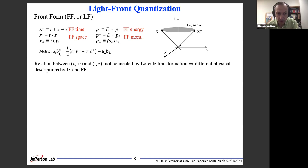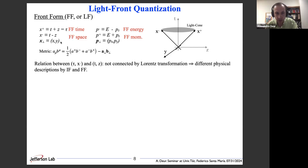Looking at the Lorentz-invariant quantity, it should be invariant regardless of which form you use, which implies that the metric of the front form has to be different from the metric of the instant form. The relation between front-form time and space and instant-form time and space is not a Lorentz transformation, so the two frames are not related by a Lorentz transform, and the two descriptions — instant form and front form — will be different.